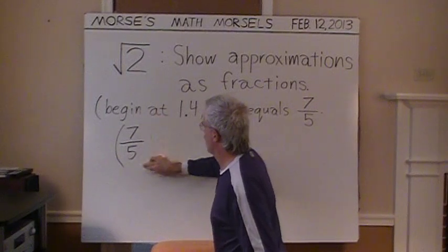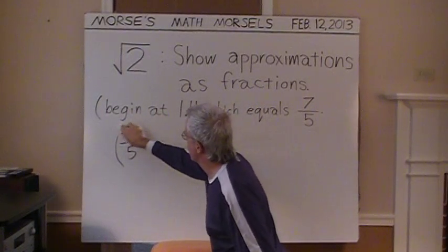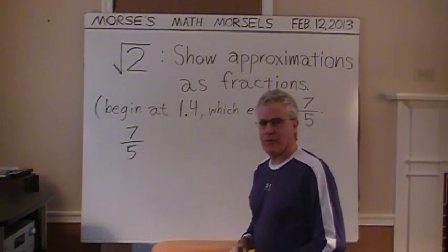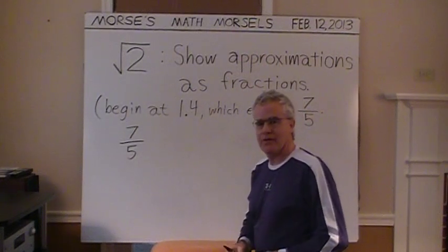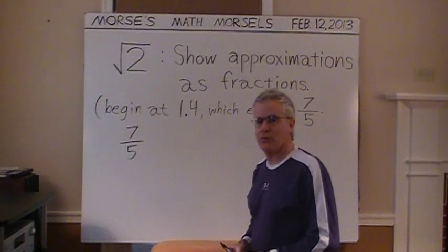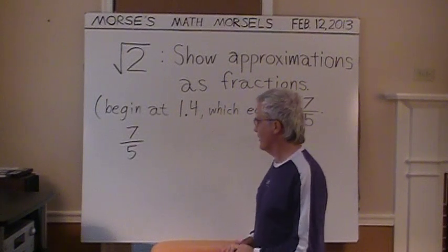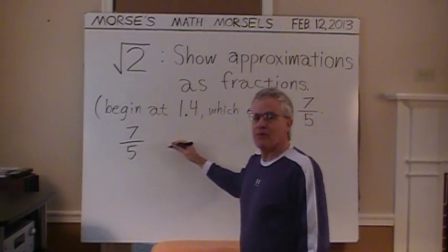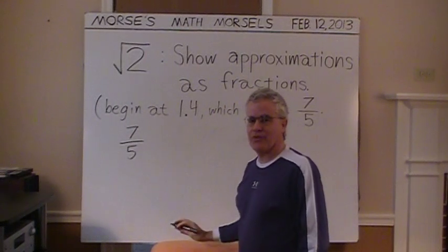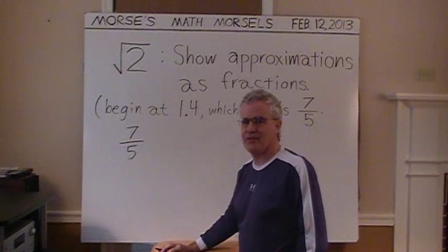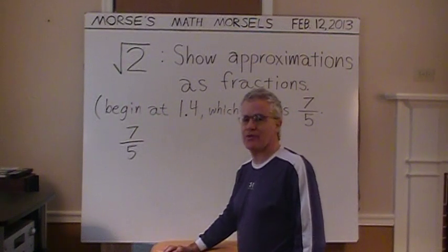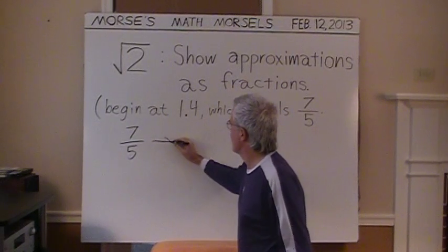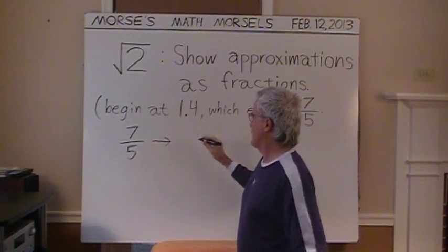I'm just going to go back to our original fraction, 7 fifths. Some long time ago, some genius, I confess I don't know who it was, discovered a way of generating fractions which are closer and closer to the square root of 2. And the squares of these fractions are ever closer and closer to 2 itself.